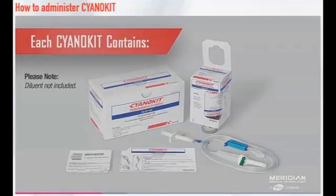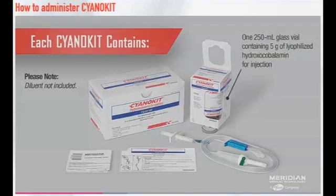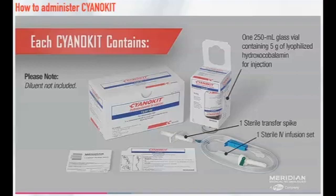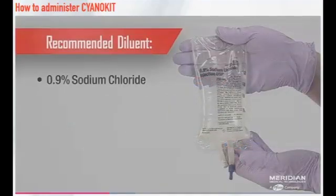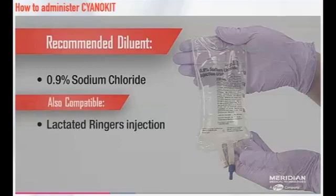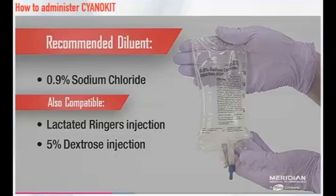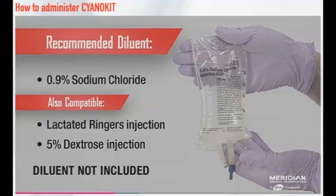Each Cyanokit contains one 250-milliliter glass vial containing 5 grams of lyophilized hydroxocobalamin for injection, one sterile transfer spike, one sterile intravenous infusion set, one quick-use reference guide, and one package insert. The recommended diluent is 0.9% sodium chloride. Lactated Ringer's injection and 5% dextrose injection have also been found to be compatible with hydroxocobalamin and may be used if 0.9% sodium chloride is not readily available. Please note that the diluent is not included in the kit.